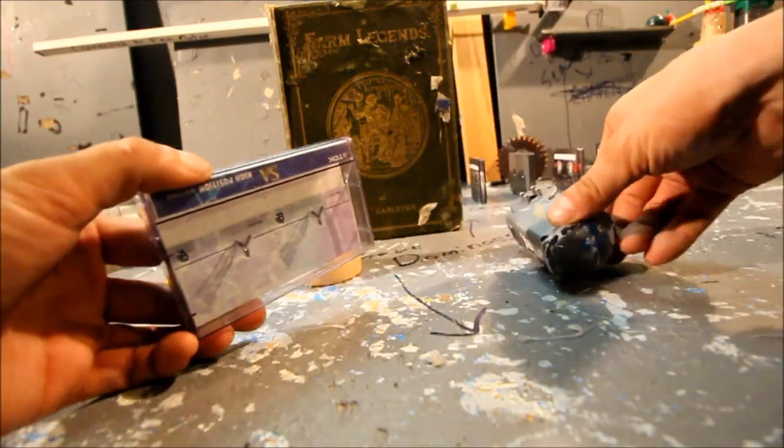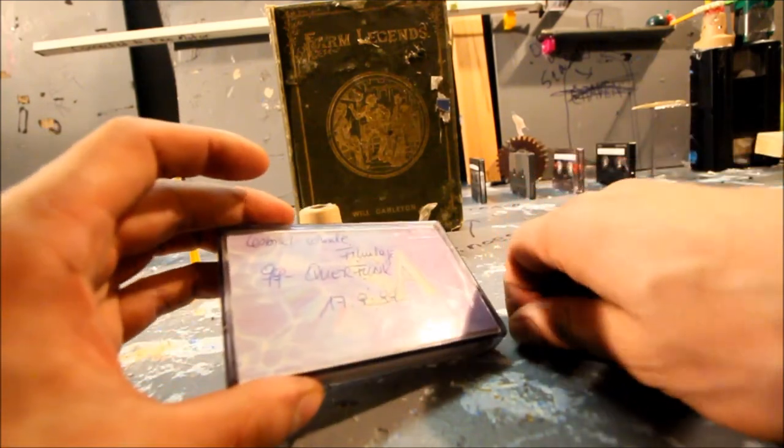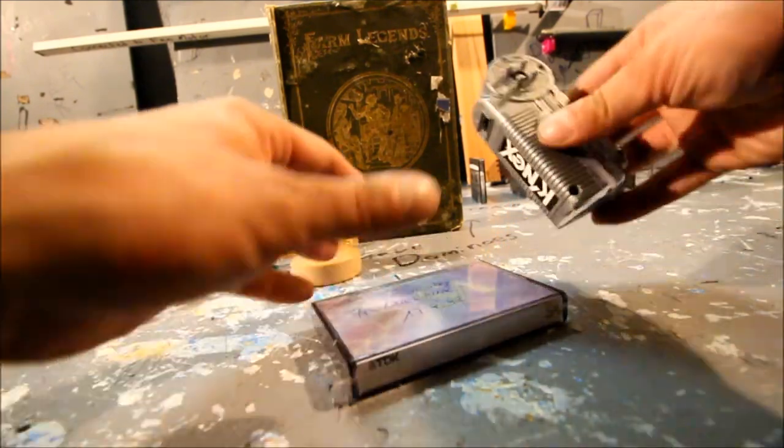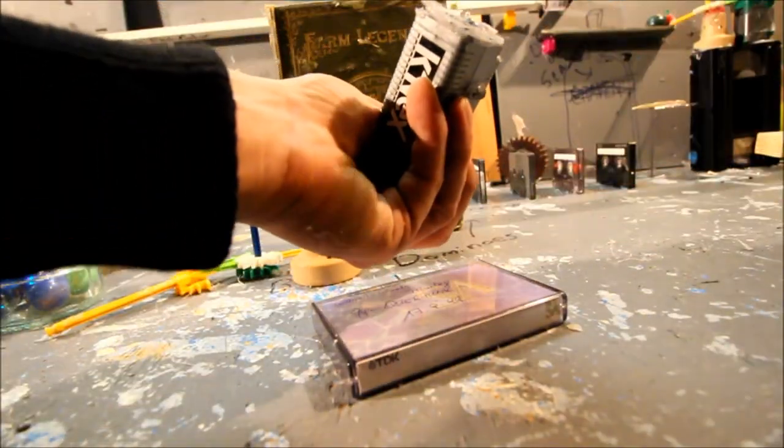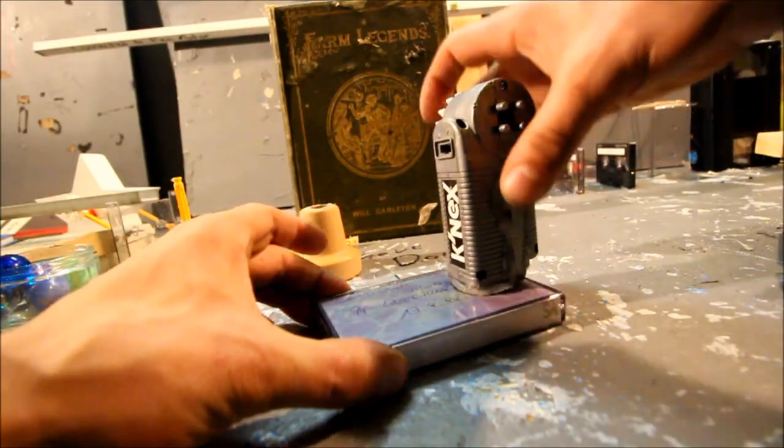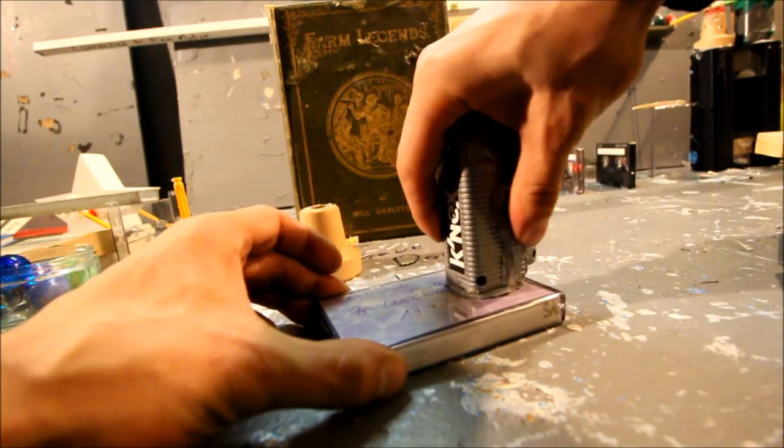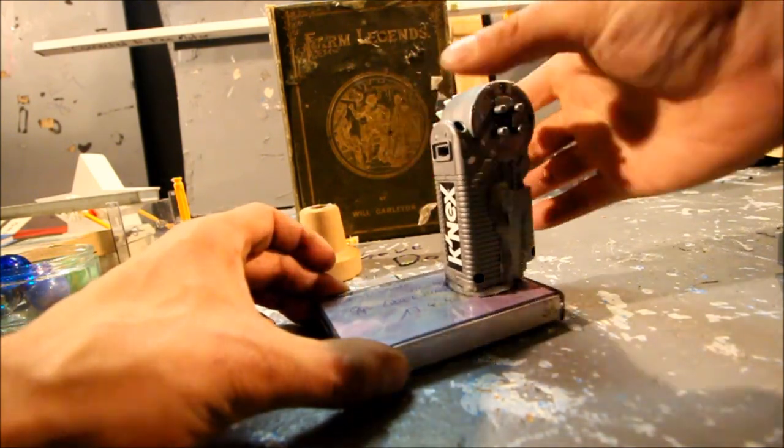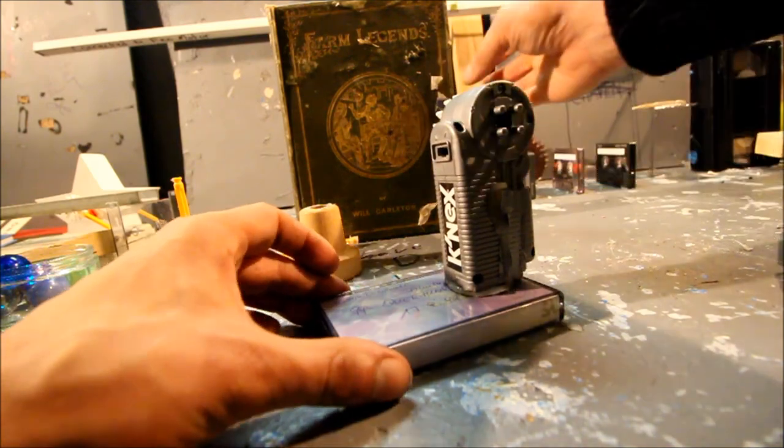You can glue this down anywhere, but I recommend gluing it on a cassette tape or something of a similar size and durability. Start by gluing the K'nex motor on one end of your base.